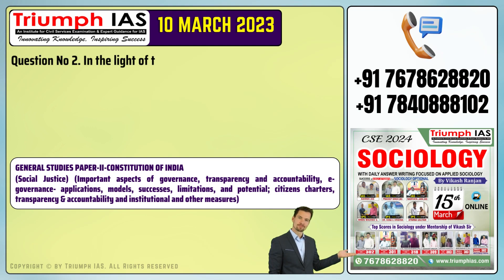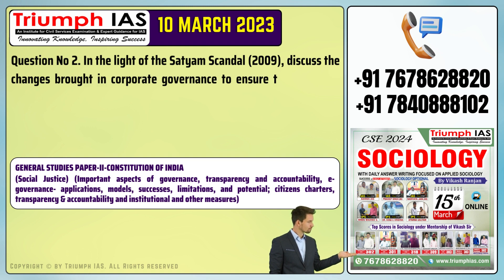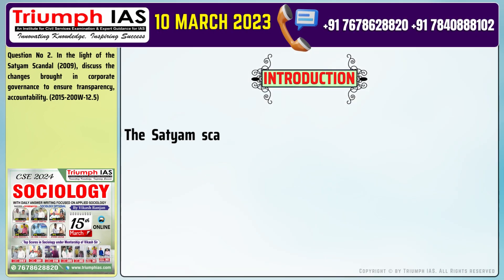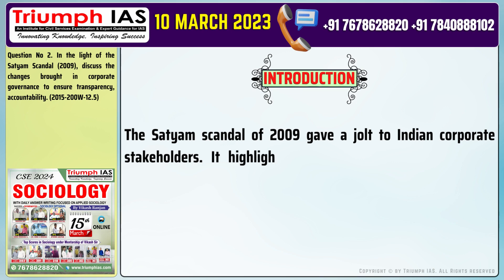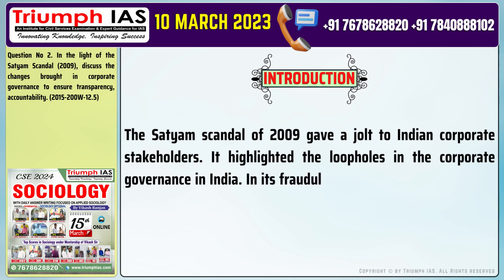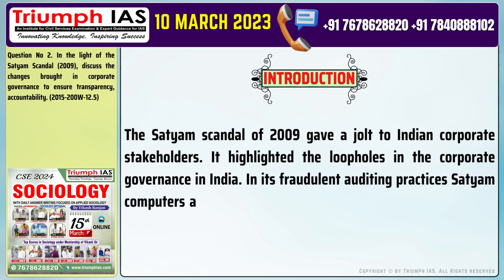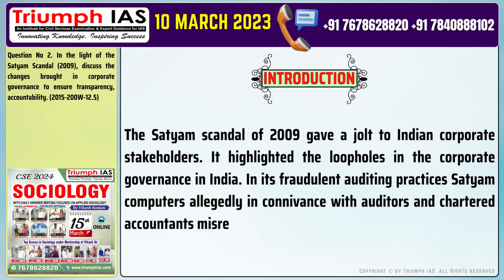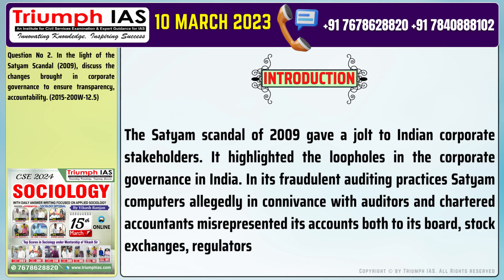Question number 2. In the light of the Satyam scandal 2009, discuss the changes brought in corporate governance to ensure transparency and accountability. The Satyam scandal of 2009 gave a jolt to Indian corporate stakeholders. It highlighted the loopholes in corporate governance in India. In its fraudulent auditing practices, Satyam Computers, allegedly in connivance with auditors and chartered accountants, misrepresented its accounts both to its board, stock exchanges, regulators, investors and all other stakeholders.